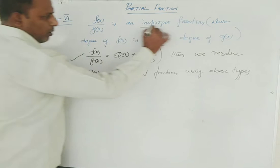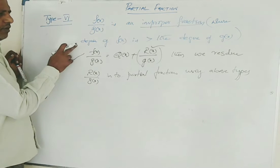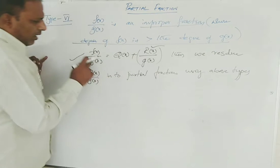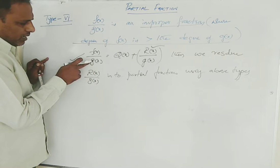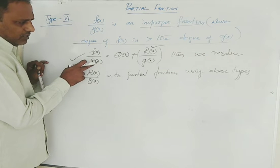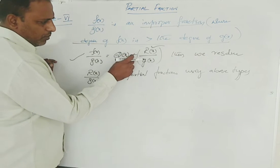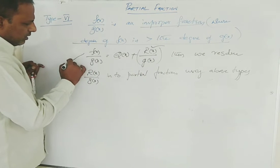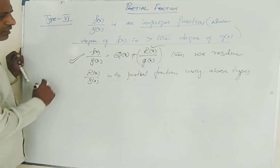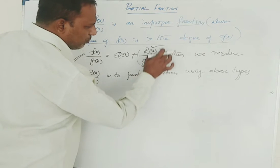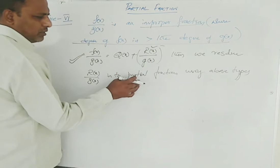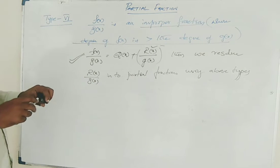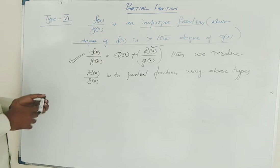So f of x by g of x is an improper fraction where the degree of f of x is greater than the degree of g of x. We divide f of x by g of x to get quotient plus remainder, then resolve the proper fraction r of x by g of x into partial fractions using types 1, 2, 3, and 4. This is the division algorithm or remainder theorem.